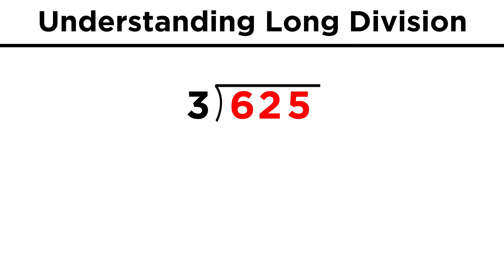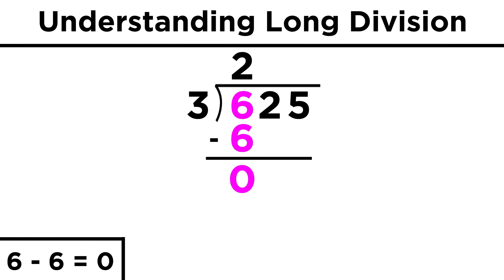Now we just go through the dividend one number at a time. Three goes into six two times, or in other words, six divided by three is two. So we put a two here in the hundreds place of the quotient. Now we do two times three, which is six, place that directly under the first six, and then subtract. Six minus six is zero, so we draw a line and write a zero here.